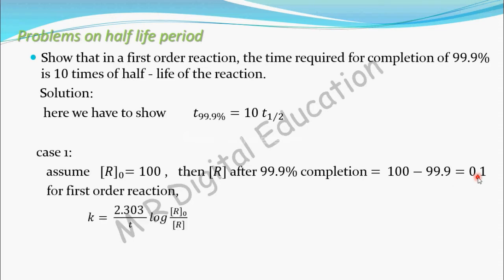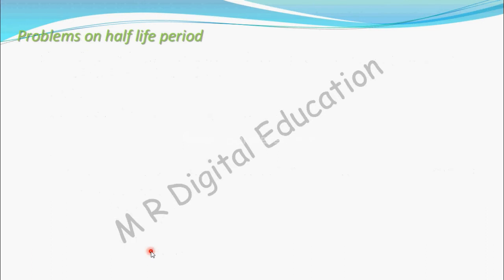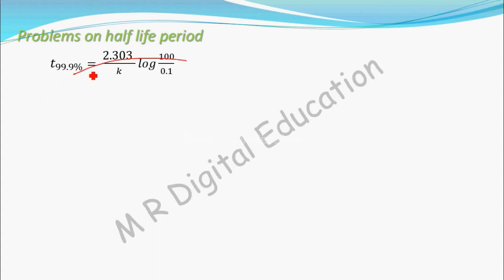Now, for first order reaction: K equal to 2.303 by T into log of R-naught by R. Here we have to find T99.9%, so rearrange to T equal to 2.303 by K into log of R-naught by R. Substitute R-naught as 100 and R as 0.1 and simplify.